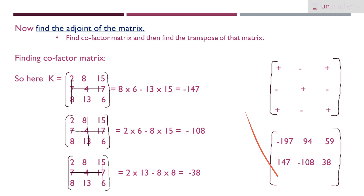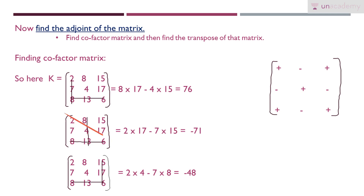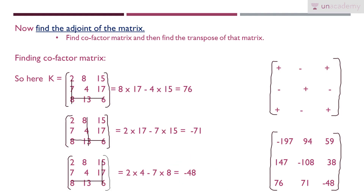For the third row: cut row 3 and column 1, compute 8×17 − 4×15 = 76; cut row 3 and column 2, compute 2×17 − 7×15 = −71; cut row 3 and column 3, compute 2×4 − 7×8 = −48. Applying the signs (+, −, +): 76 stays +76, −71 becomes +71, and −48 stays −48. This completes the cofactor matrix.